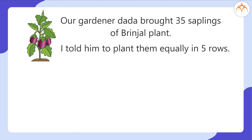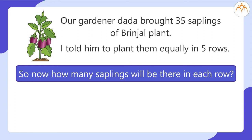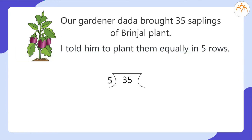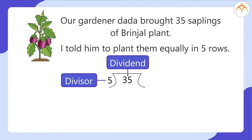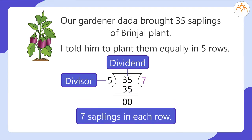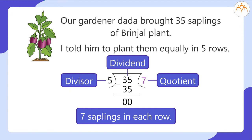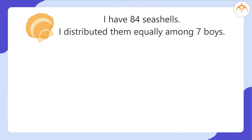Now let's take another example. Our gardener dada brought 35 saplings of brinjal plant and I told him to plant them equally in 5 rows. How many saplings will be there in each row? In this case, 35 is the dividend and 5 is the divisor, so 35 divided by 5 is equal to 7. The answer is 7 — 7 saplings in each row. So what is the number 7 called in division? This is called the quotient. The quotient is the answer.